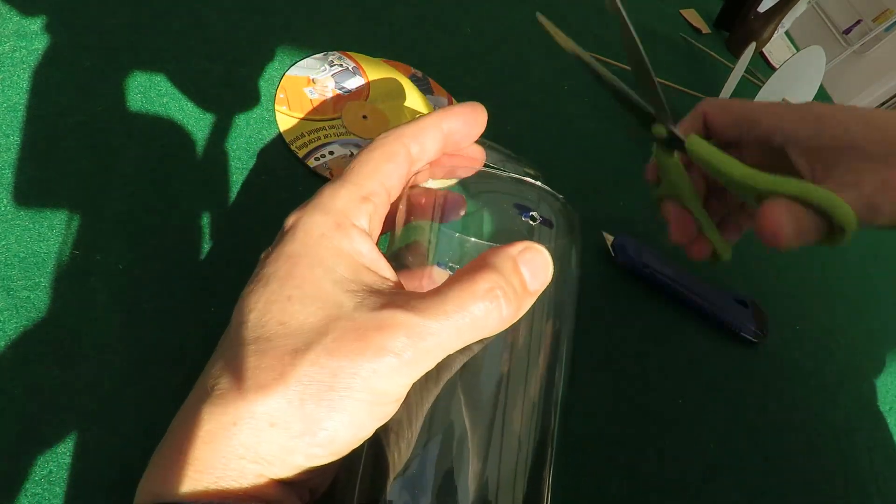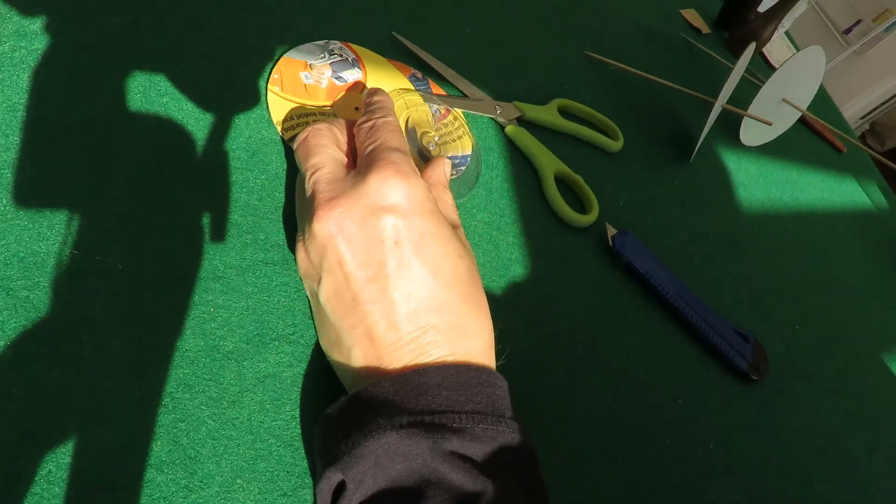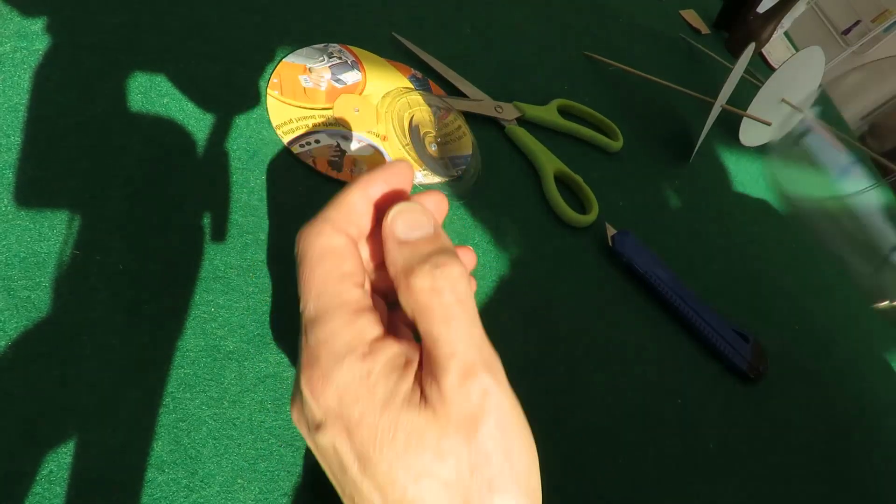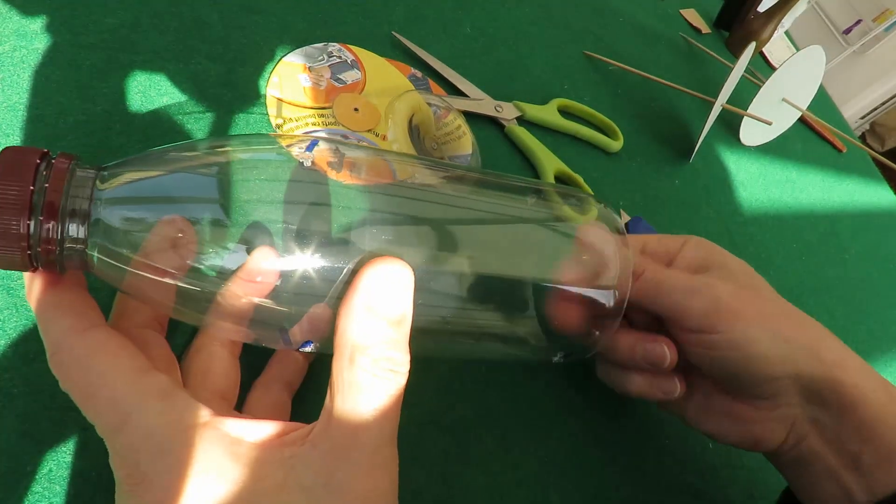So that's what I want to do. I'm going to finish off with a pair of scissors. So there we are, there's our bottle with a hole in the bottom now.